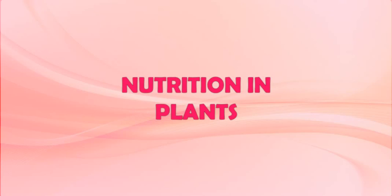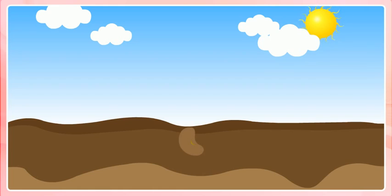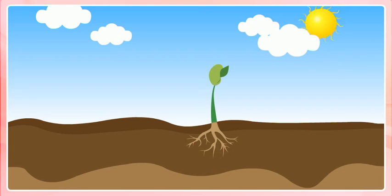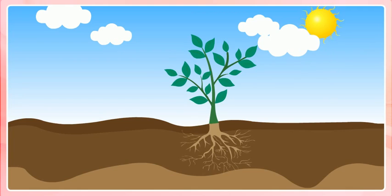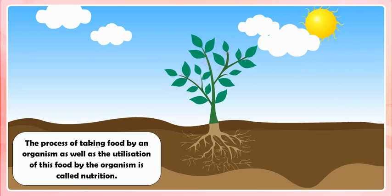Nutrition in Plants. All the living organisms require food. The organisms need to take food to obtain energy, to obtain material for growth, and to obtain materials for the repairs of damaged parts of the body. The process of taking food by an organism as well as the utilization of this food by the organism is called nutrition.